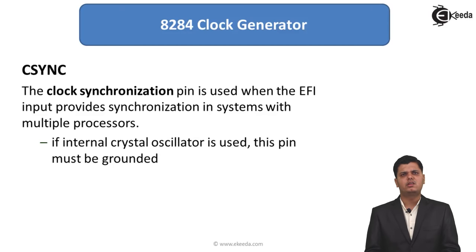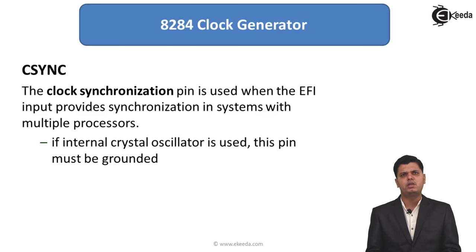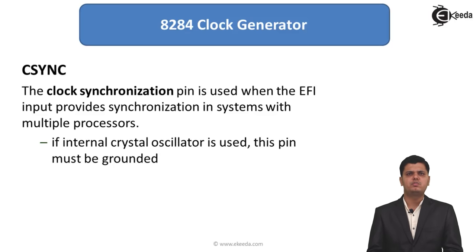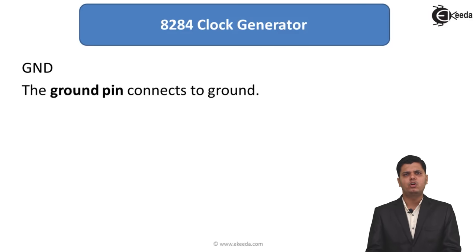The C-sync pin, or clock synchronization pin, is used when the EFI pin provides synchronization in a multiple processor system. Whenever multiple processors are connected and frequency is provided by an external clock generator, the C-sync signal is used to sync the external clock with the internal clock of the 8284. If the internal clock oscillator is used, this pin must be grounded.